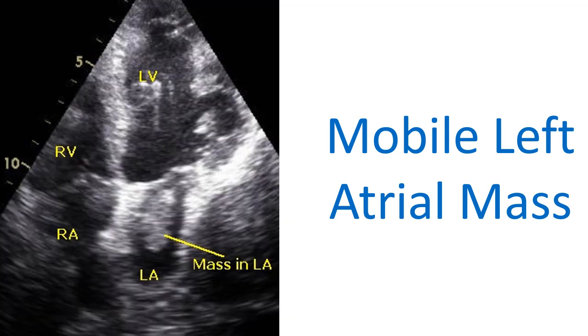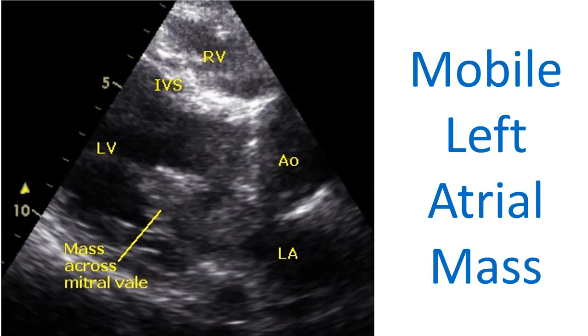Annotated image showing when the mass is inside the left atrium. Mass across the mitral valve is also seen in an annotated parasternal long axis view.